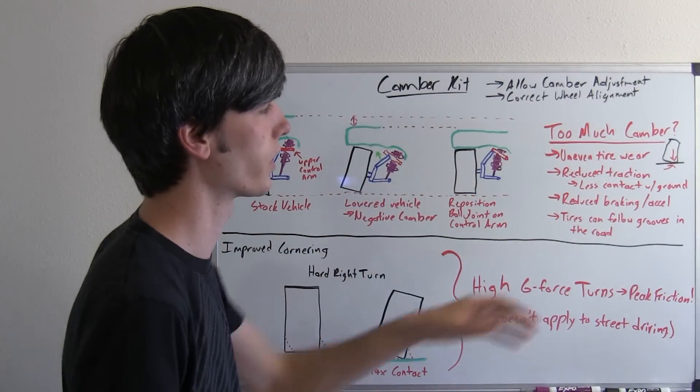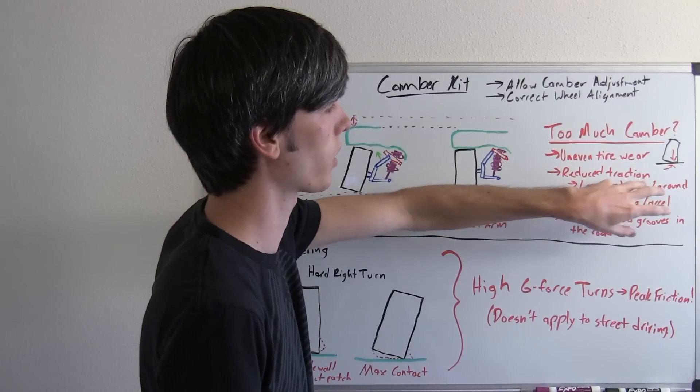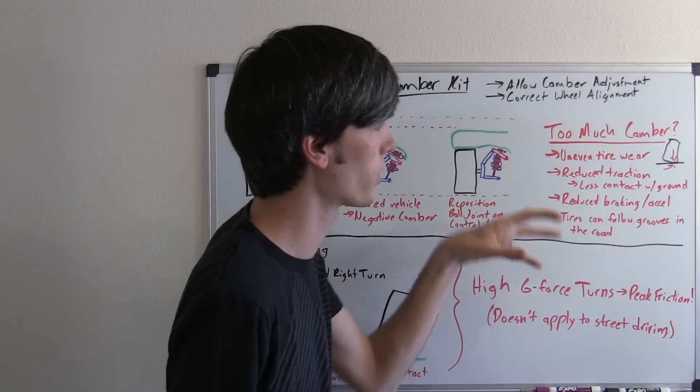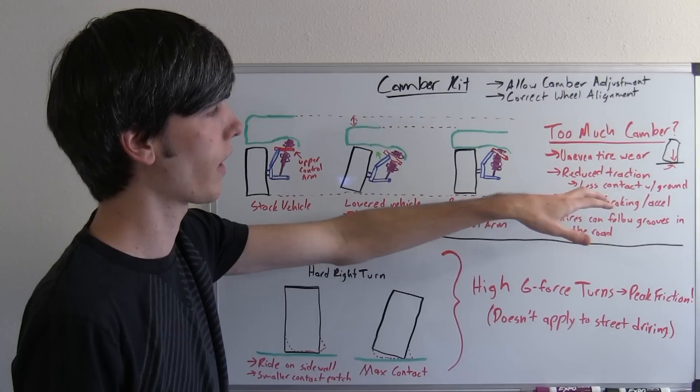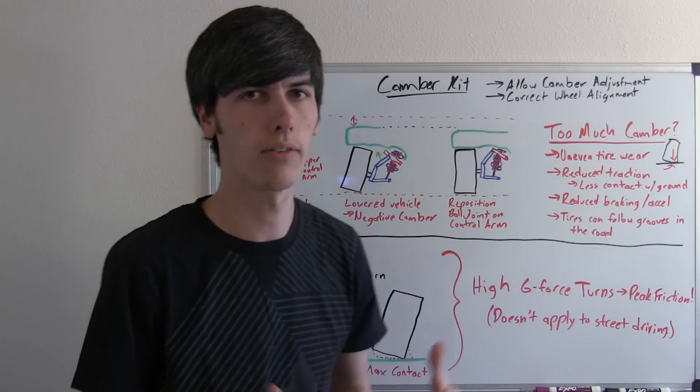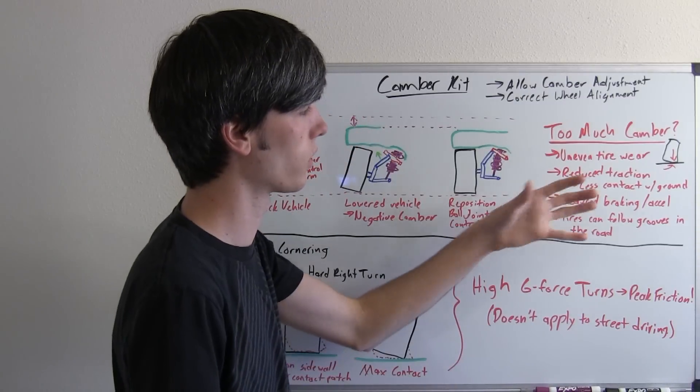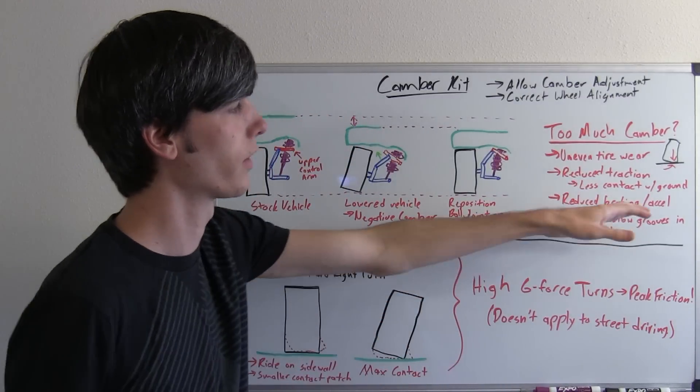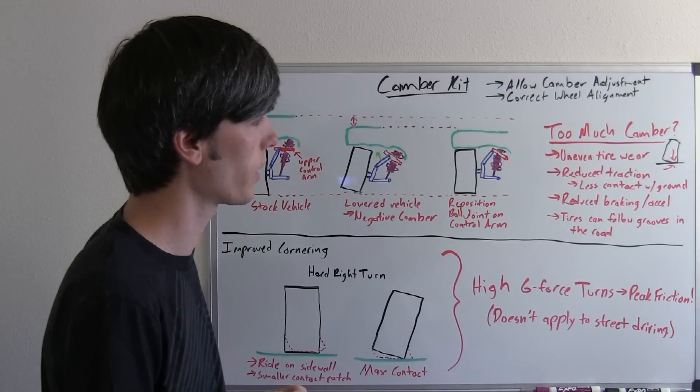Also you're going to have reduced traction because you're going to have a smaller contact patch, or more of your weight on a smaller contact patch on the ground. And because you've got less traction, you're going to have reduced braking. And if your vehicle is traction limited because your tires spin when you accelerate, then you're also going to reduce your acceleration.